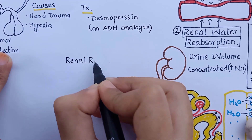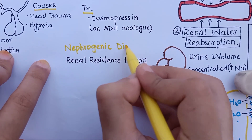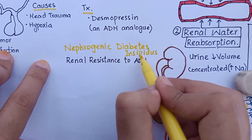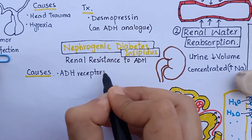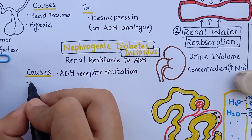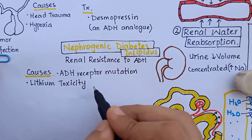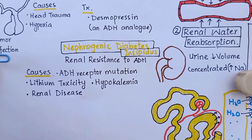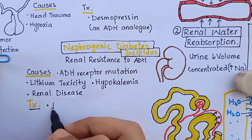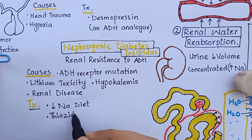The other type is nephrogenic diabetes insipidus, in which there is renal resistance to ADH action. It can be caused by hereditary ADH receptor mutation or by drugs — for example, lithium, which is used to treat manic depressive disorders — or it can be caused by hypokalemia or any other infiltrative disease of the kidney. The treatment is first to manage the underlying cause and to give a low sodium diet and thiazide diuretics.